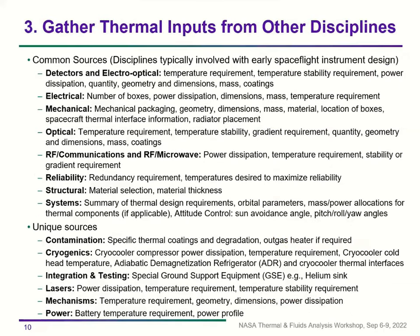Step three is gathering thermal inputs from other disciplines. Common sources include detectors and electro-optical engineers, who provide temperature requirements, stability requirements — which are especially important for detectors — power dissipations, quantities, geometry, dimensions, mass, and coatings. From electrical engineers you get the number of electrical boxes, power dissipations, dimensions, masses, and temperature requirements.